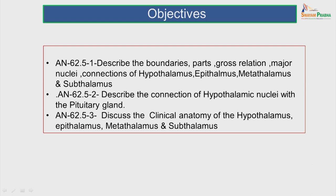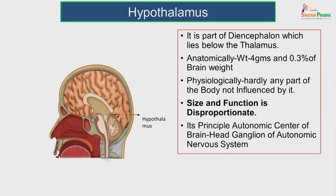The objective of studying the hypothalamus is to describe the boundaries, parts, gross relation, major nuclei connections of the hypothalamus, epithalamus, metathalamus and subthalamus. Also to describe the connection of the hypothalamic nuclei with the pituitary gland and discuss the clinical anatomy of hypothalamus, epithalamus, metathalamus and subthalamus.